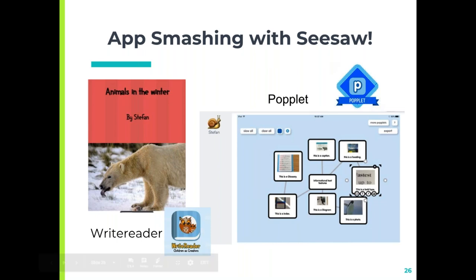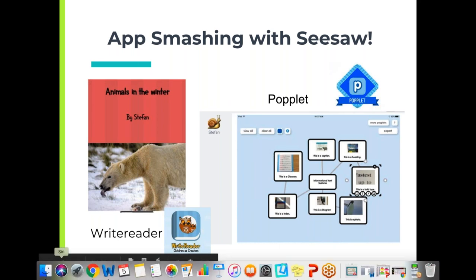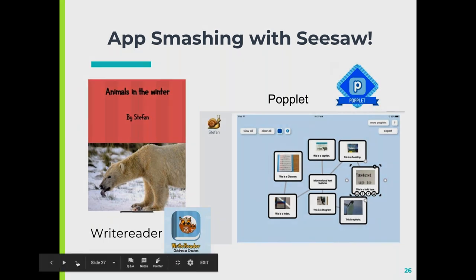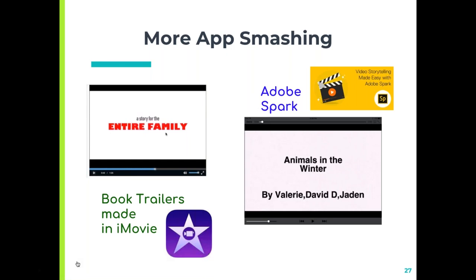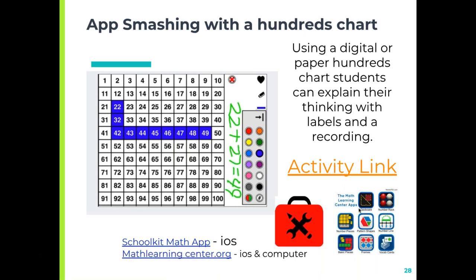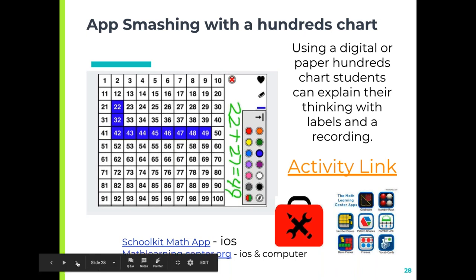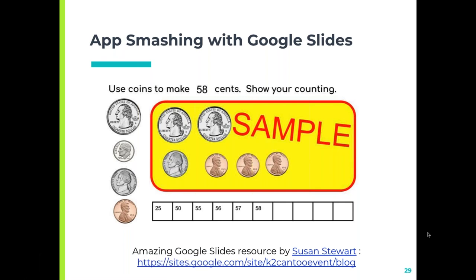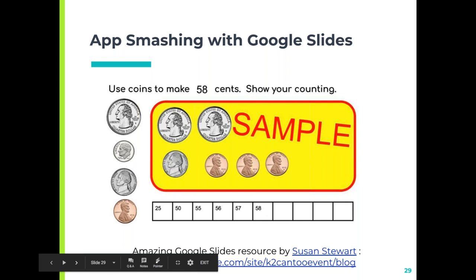App smashing with Seesaw — there are so many ideas I kept at the end of the slides. If you have any questions or want specific examples on app smashing, you're welcome to click on any of these, check them out, send me a tweet, or email me. I use book trailers, Adobe Spark, Poplet, Write Reader, and in math I love School Kit Math — it's an app for just iPads. It's mathlearningcenter.org and there's an activity link for a hundreds chart. Another app smash is with Google Slides — Susan Stewart started the K2 Can2 movement for primary teachers. She has a website and will give you a free set of slides that allow students to move quarters and dimes, and as you can see they're counting at the bottom — a great assessment.